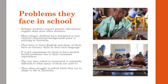Refugee children face various problems in Australian schools and therefore require greater educational support than most other students. This is because most refugee children have disrupted or non-existent educational backgrounds prior to arriving in Australia. They have to learn English for the first time and many have no literacy skills in their first language. In addition, it is not uncommon for them to have mental health problems due to their traumatic experiences, particularly for those coming from war-torn countries. The way school is structured is also culturally different to what most of these students are accustomed to.